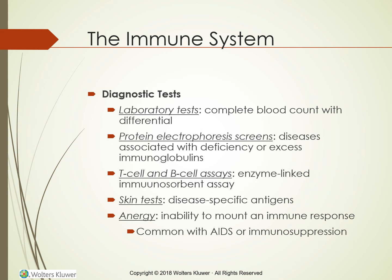Diagnostic tests: laboratory tests used to identify immune system disorders usually include a CBC (complete blood count) with differential, protein electrophoresis to screen for diseases associated with a deficiency or excess of immunoglobulins, T-cell and B-cell assays or counts, and the enzyme-linked immunosorbent assay. Additional tests are performed when an autoimmune or genetic immune disorder is suspected. Skin tests may also be given — disease-specific antigens such as purified protein derivative of the tuberculin toxin are injected intradermally on the inner aspect of the forearm; the injection swells if the client has developed antibodies against the antigen. Skin tests using various common disease antigens are administered if anergy (A-N-E-R-G-Y) is suspected — anergy is the inability to mount an immune response, a common finding among adults who have AIDS or are immunosuppressed.